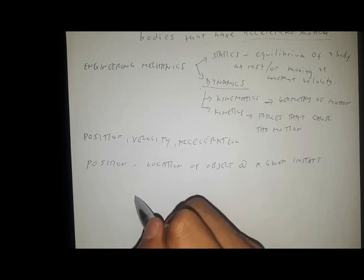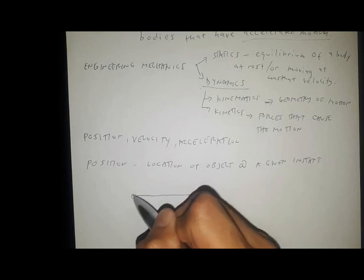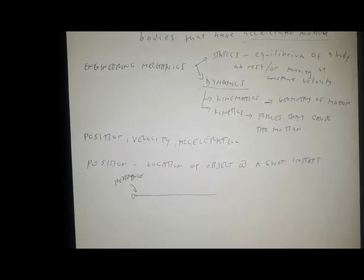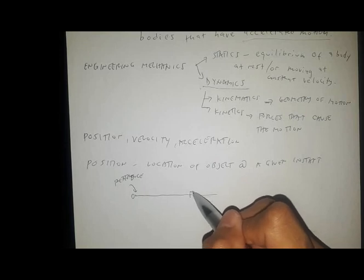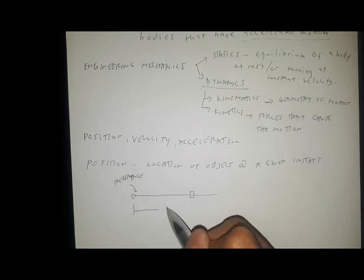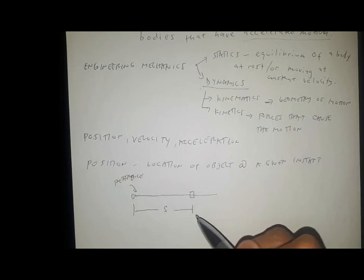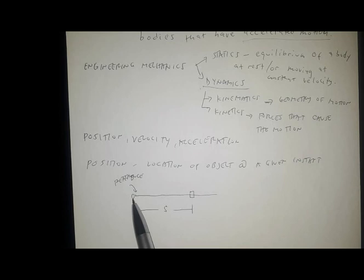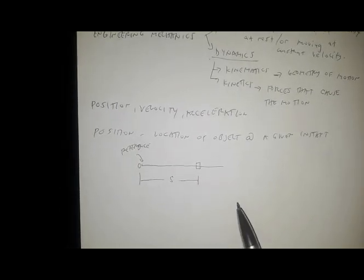Position is always defined in reference to something — there must be a reference location or reference point. For example, if this is your reference zero and your particle is here, then with respect to the reference, the position is denoted by the variable s, giving the distance s of the particle from the reference zero.